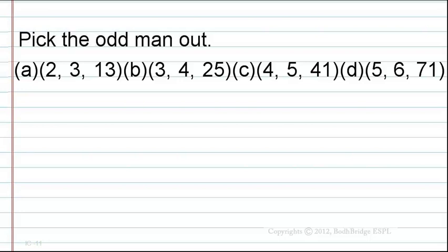The four options are: Option A — 2, 3, 13. Option B — 3, 4, 25. Option C — 4, 5, 41. Option D — 5, 6, 71. Now let's look at the solution.